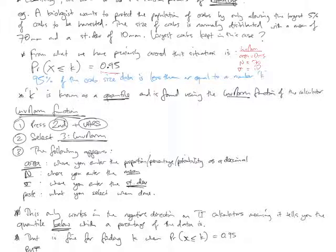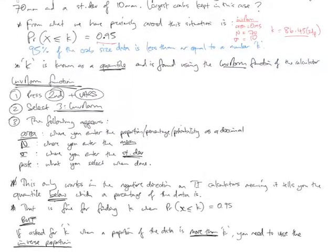And so, that tells me in the answer when I've pressed enter. It tells me what the quantile is which is K. It's 86.45 to 2dp. Okay. So, anything larger, any crab larger than 86.45 mils is going to be allowed to be harvested. Anything below 86.45 is kept to protect the population. So, that's how that function works in the graphics calculator. Inverse normal.